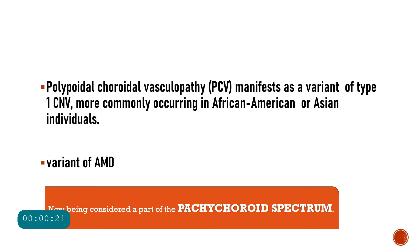PCV is actually considered to be a variant of type 1 CNVM — that means the type of CNVM which is present below the RPE — and it occurs more commonly in African-American or Asian individuals. Initially we were considering that PCV is actually a variant of AMD.